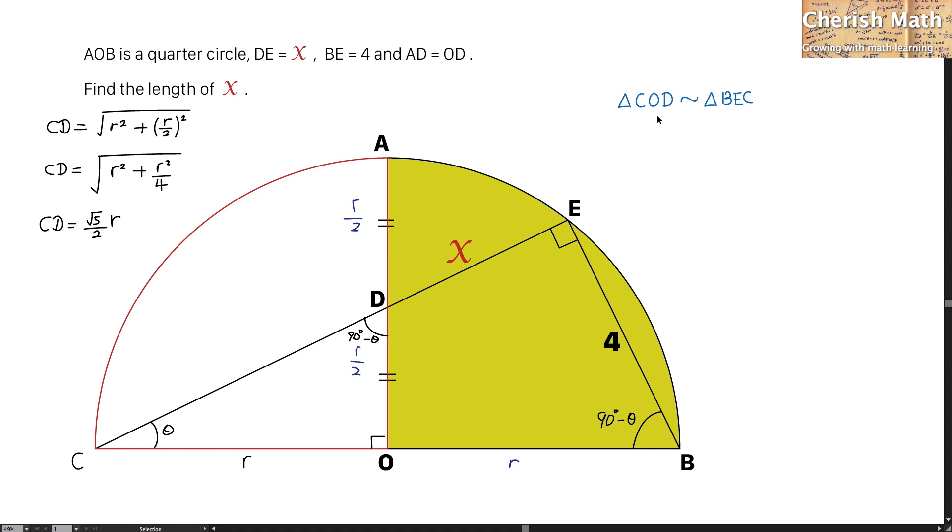For the triangle COD, it is in fact similar to the triangle BEC. And in this case, if I use the length of BEC, which is measuring at 4 units, divided by R over 2, this is known as the scale factor.